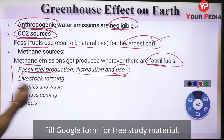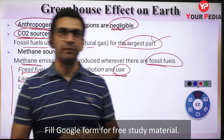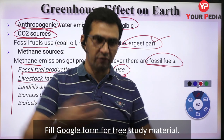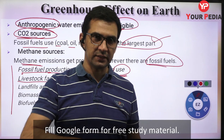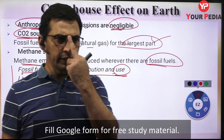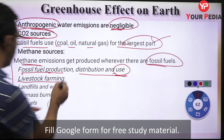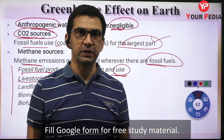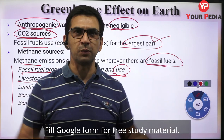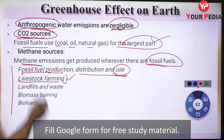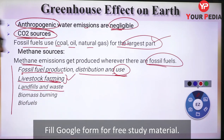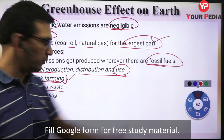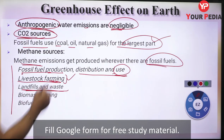Livestock farming is another source of methane. Cattle, during digestion, produce a lot of methane which is released through burping. Our large dependence on meat means we are rearing many livestock animals, so when the cattle population is larger, larger amounts of methane are released. Landfill and waste sites are another source - when waste decomposes in landfills, methane is released.